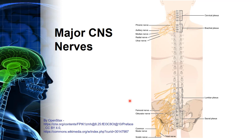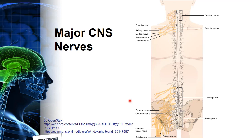This could happen to any of us. When we turn our body slightly and try to lift something to our side, we can displace the intervertebral disc — causing a slipped disc, sciatica, or worse, injuries to larger portions of the vertebrae. There are pictures in the Complete Anatomy app of the phrenic nerve, the mediastinum portion of the phrenic nerve, and the posterior neck triangle nerves — all the nerves essentially within the cervical and brachial plexus.